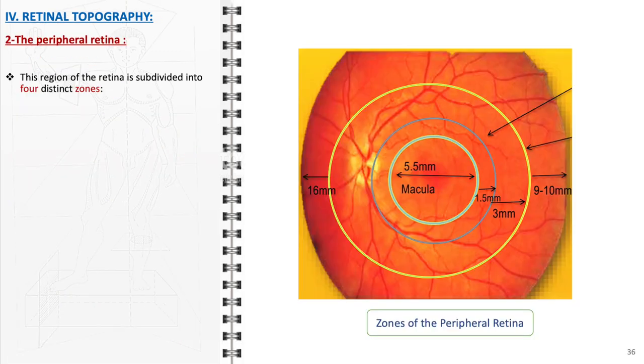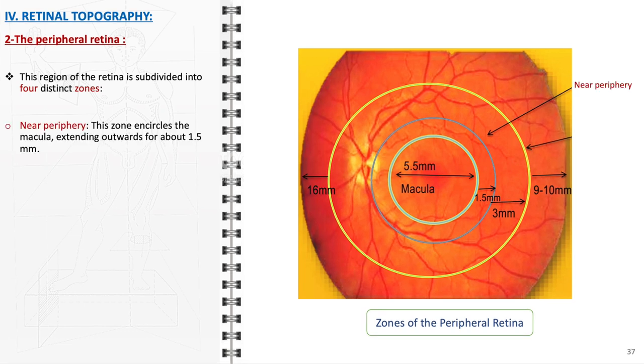The peripheral retina, a crucial component for peripheral vision and motion detection, is subdivided into four distinct zones, each with specific characteristics and functions. 1. Near periphery: this zone immediately surrounds the macula, extending outwards for about 1.5 mm. It serves as a transition zone between the central retina and the more distant peripheral areas.